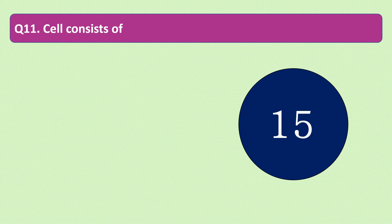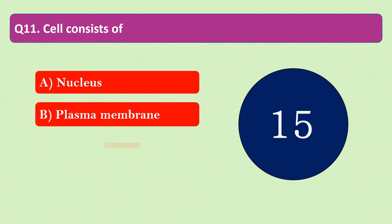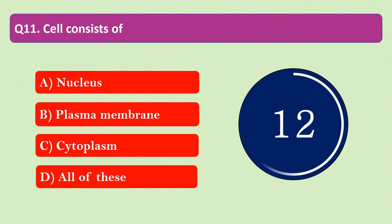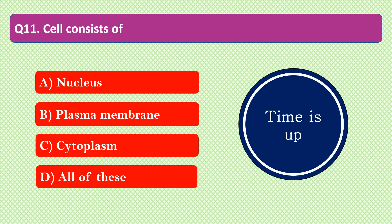Question number 11: A cell consists of dash. The options are A. Nucleus, B. Plasma membrane, C. Cytoplasm, or D. All of these. Your time starts now. Your time is up and the right answer is option D: All of these. A cell consists of nucleus, plasma membrane, and cytoplasm.